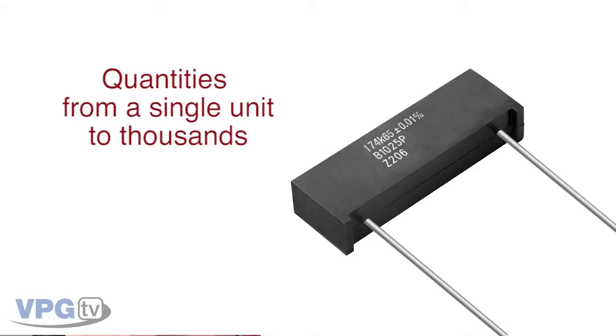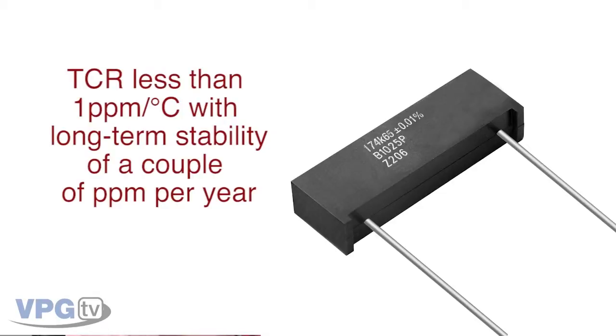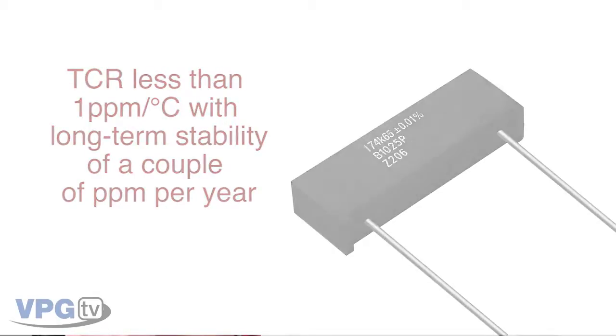The Vishay foil resistor also has an extremely low TCR of less than 1 ppm per degree C, with long term stability of a couple of ppm per year.